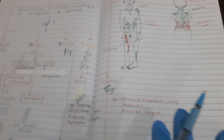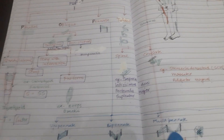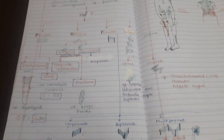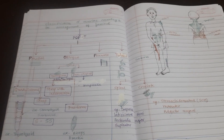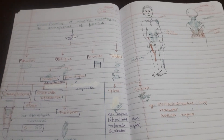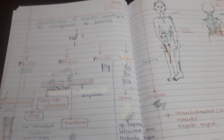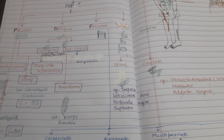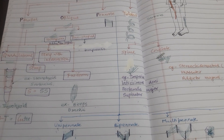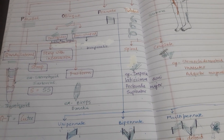So this is how we can memorize the examples of muscle architecture variety. Thank you.